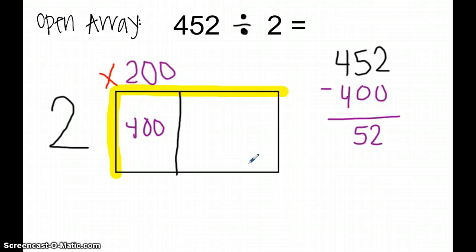For example, 2 times 10 is 20. 2 times 20 is 40. And 2 times 30 is 60. Well, if I think about those, 2 times 20 is closest to 52 because 2 times 20 is 40. So then I'm going to take 52 minus 40. 52 minus 40 leaves me with 12.